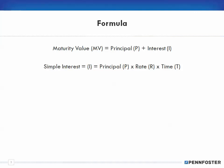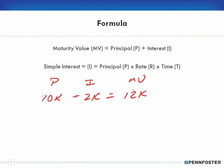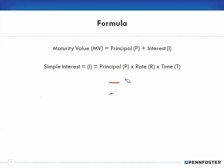Okay, formulas. Basically there are two formulas. The first is: maturity value equals principal plus interest. So if I had $10,000 of principal and the interest on that is $2,000, the total — the maturity value — is $12,000. It's just as simple as knowing your principal, figuring out your interest, and adding them together.